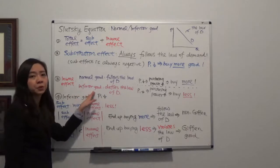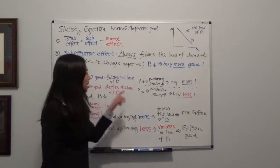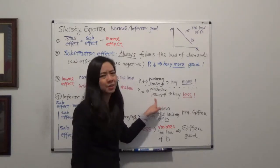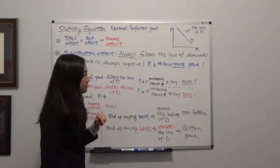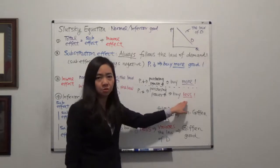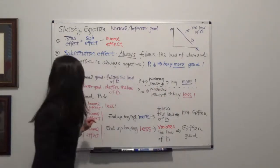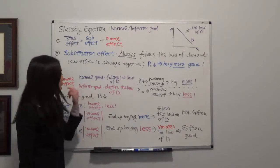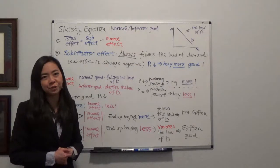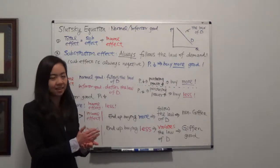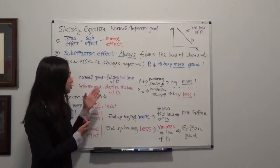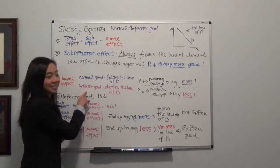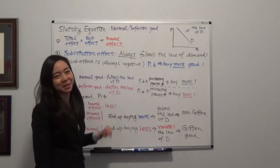But if the good is an inferior good, then income effect tells you: the price of the good goes down, purchasing power has gone up, but because this good is inferior, income effect whispers that you don't like this good, so you should buy less. So income effect may or may not follow the law of demand — it depends on whether it's a normal or inferior good. If it's normal, it follows the rule; if it's inferior, it defies the law of demand. That's a useful way to memorize it.